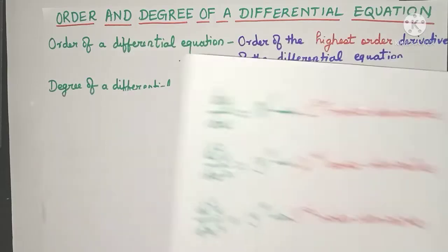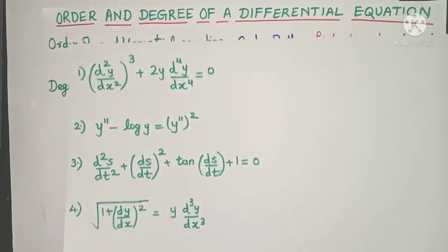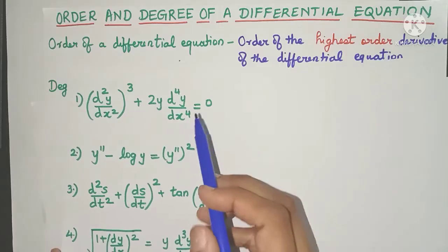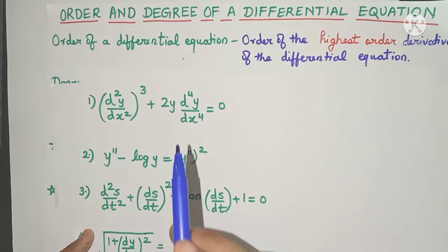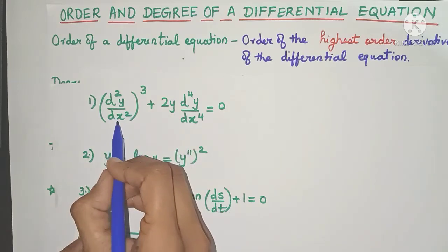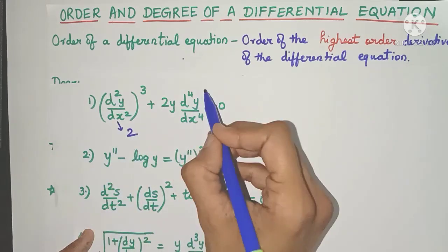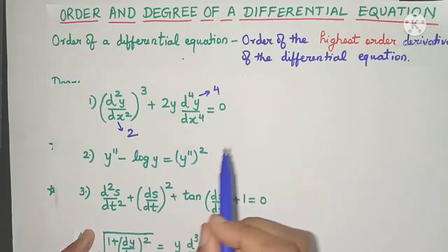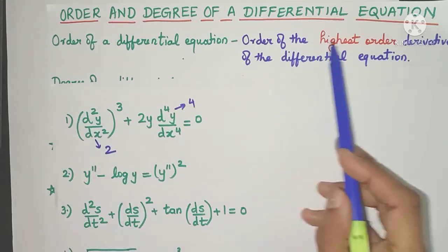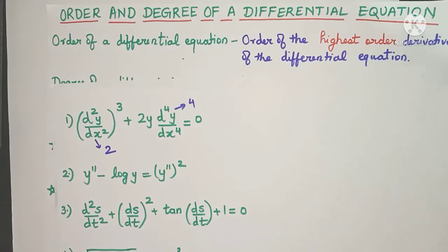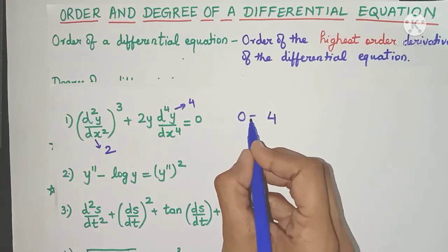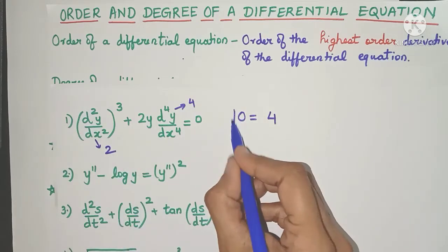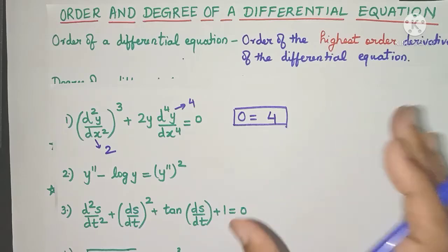Let's see a few examples of differential equations and find out their orders. In the first example, there are two derivatives — one of the second order and one of the fourth order. By definition, we take the highest order derivative, which is 4. So 4 is the order of the entire differential equation. It's very easy!